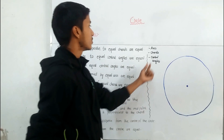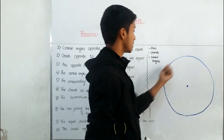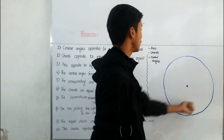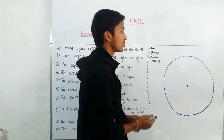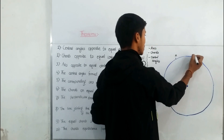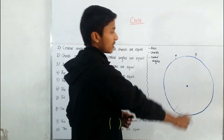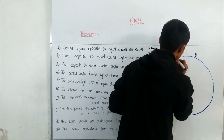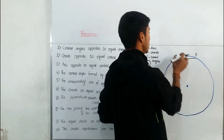Arcs means the portion of a circumference. Circumference means this boundary line of the circle is known as the circumference, and the portion of the circumference is known as an arc. So the portion from point A to point B of this circumference is known as arc AB.